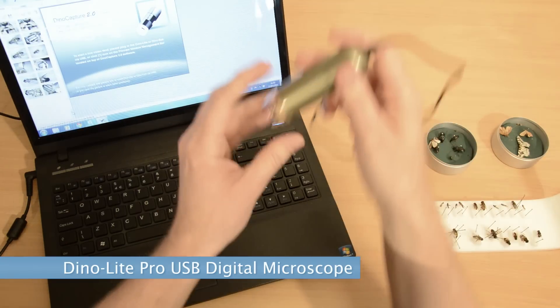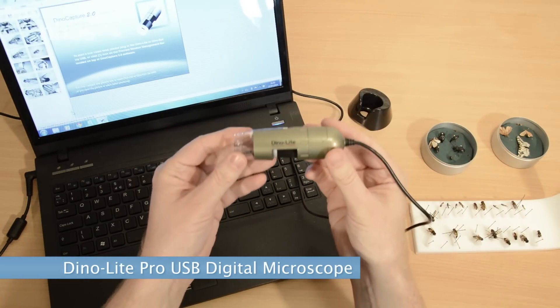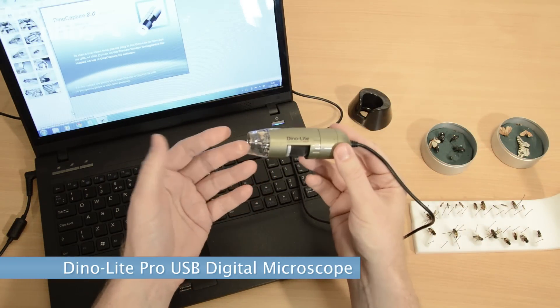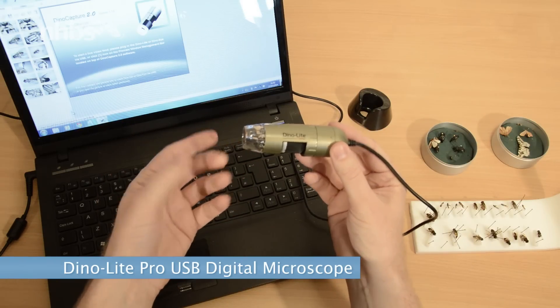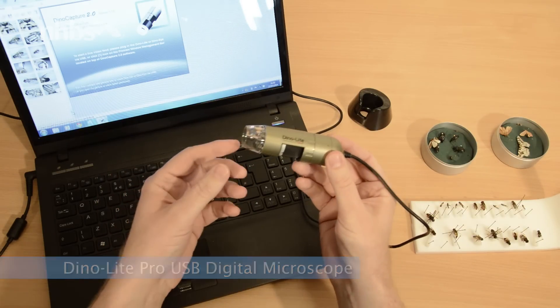Welcome to our quick demo of the handheld Dino-Lite Pro USB digital microscope. There are a number of models with a variety of magnification, lenses as well as other specifications and accessories.